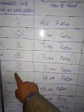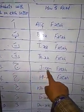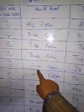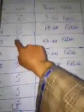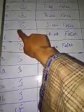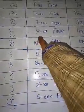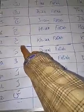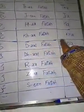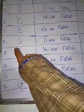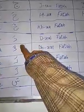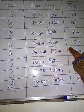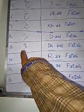The fifth one is Jim, having a short diagonal stroke on it — Jim Fatah is called 'ja'. The sixth one is Ha, having a short diagonal stroke on it — Ha Fatah is called 'ha'. The seventh is Kha with a short diagonal stroke — Kha Fatah is 'kha'. The eighth is Dal, having a short diagonal stroke on it — Dal Fatah means 'da'.